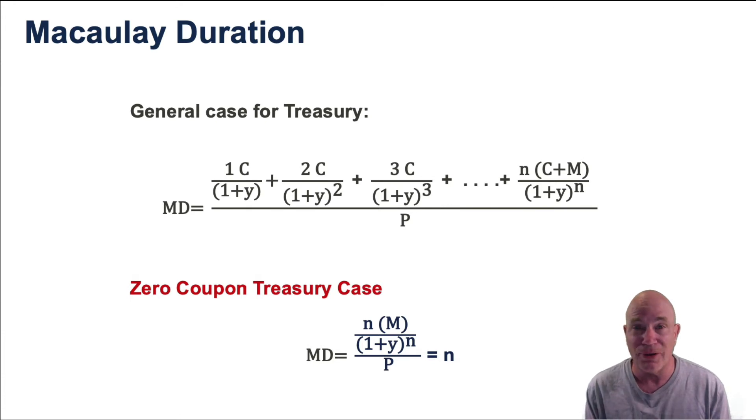All terms go away. If you look at it, in the end, what happens is everything cancels out and our Macaulay duration is n, the number of periods in the bond.